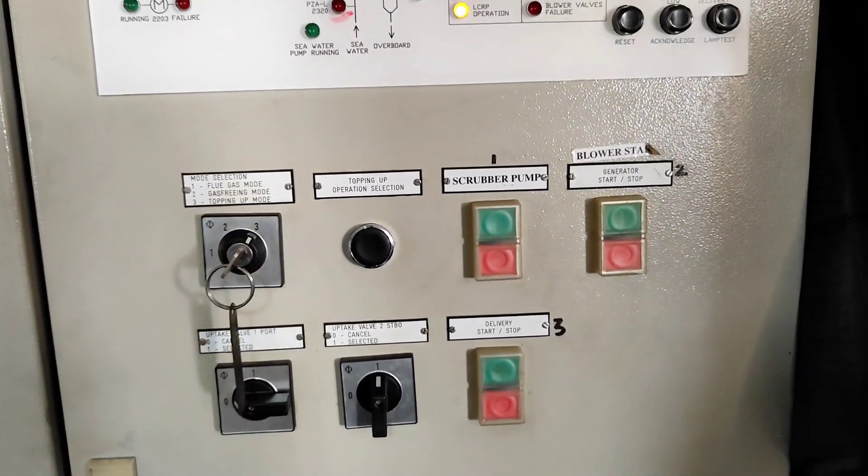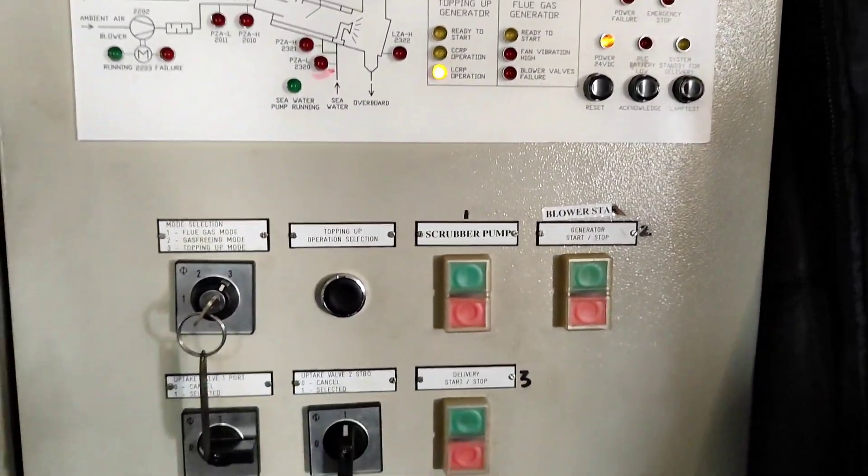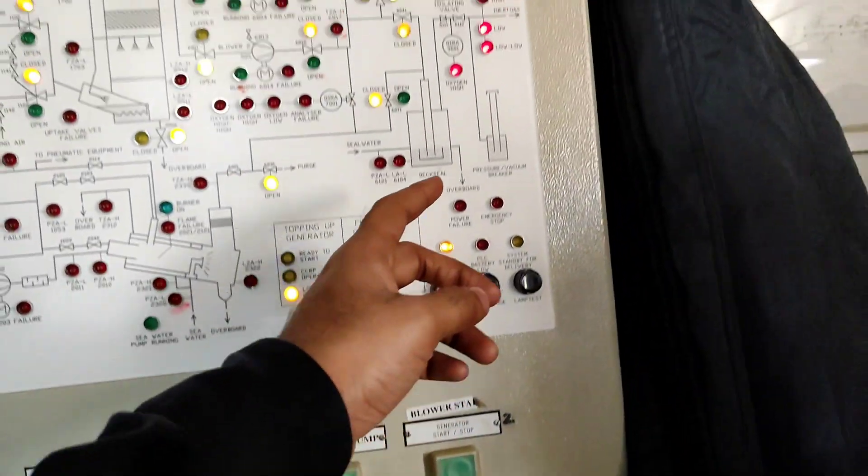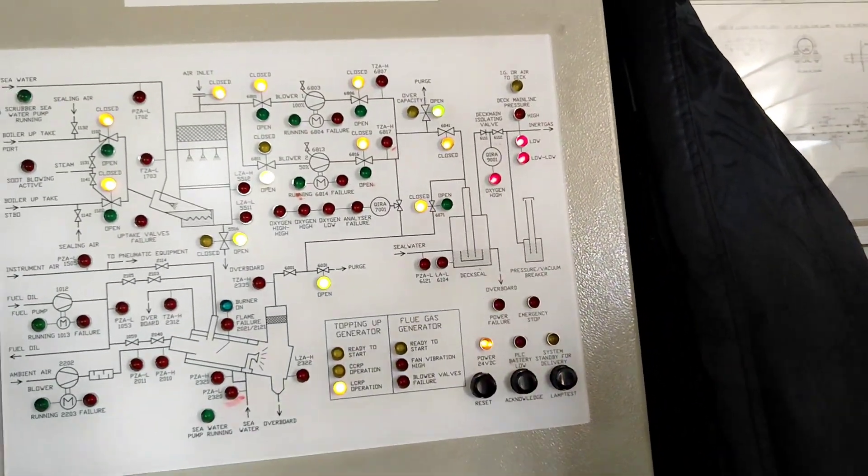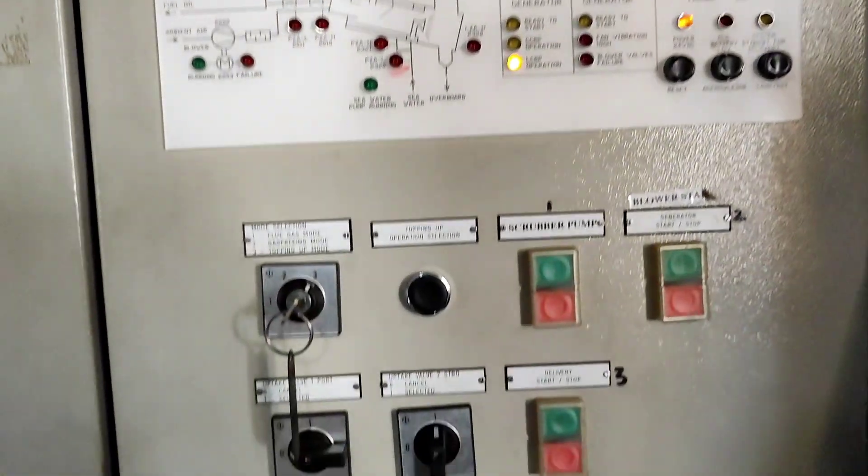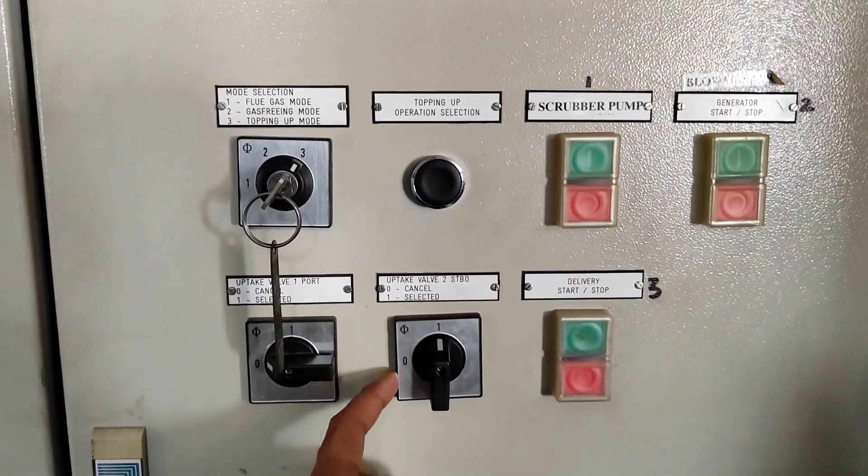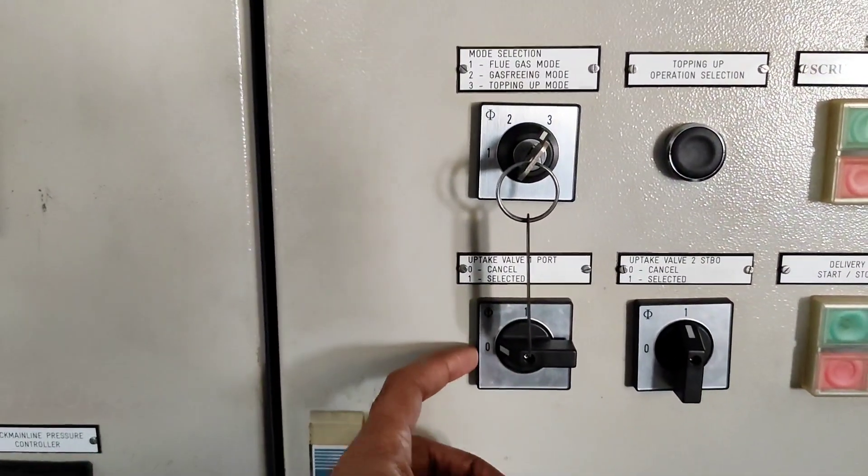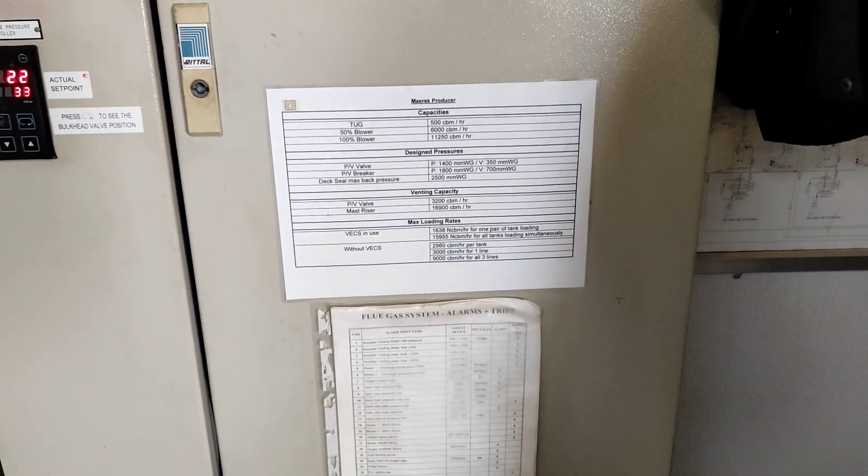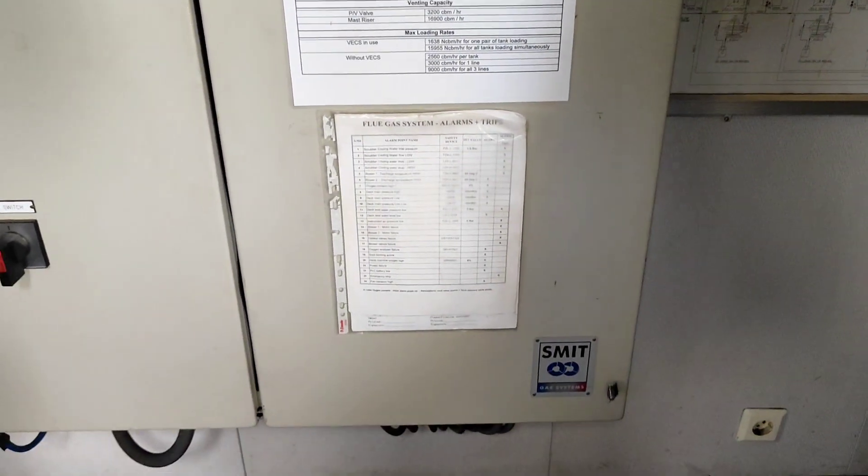So scrubber pump you can start, generator start stop, delivery wall start stop. This delivery is basically your main wall, IG main wall to deck. So this is for uptake wall 2 starboard and uptake wall 1 starboard, whatever you want you can select it. Down you have some parameters and some manual.